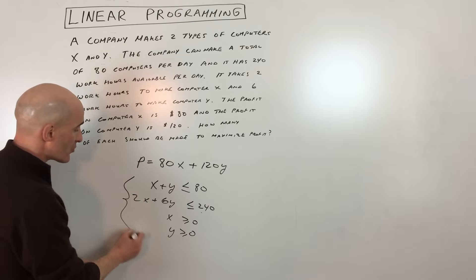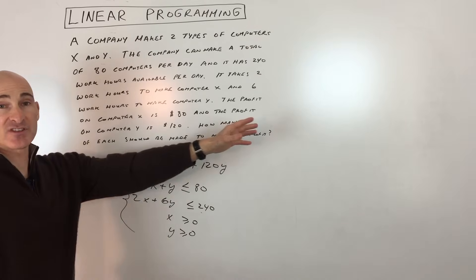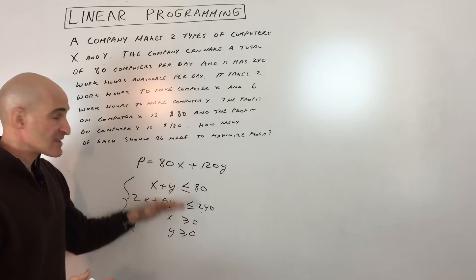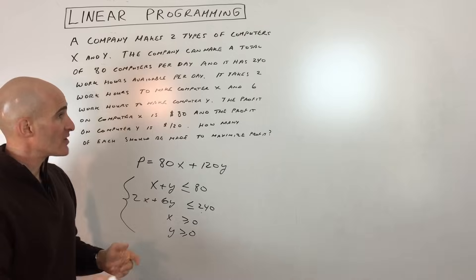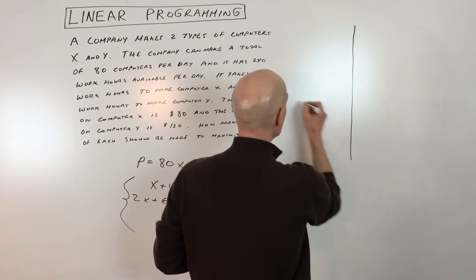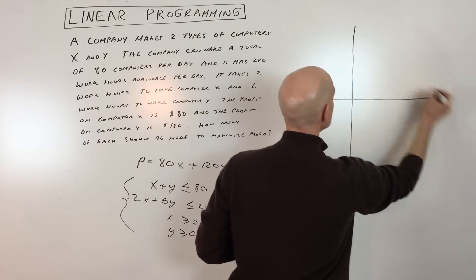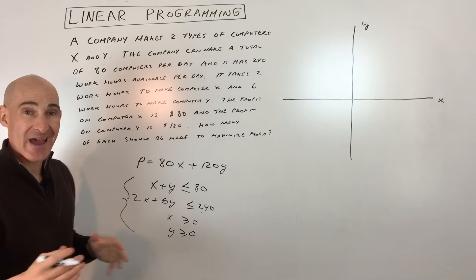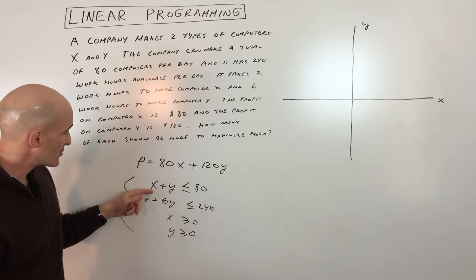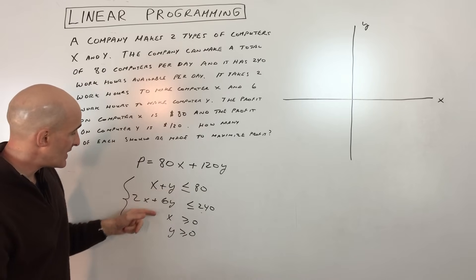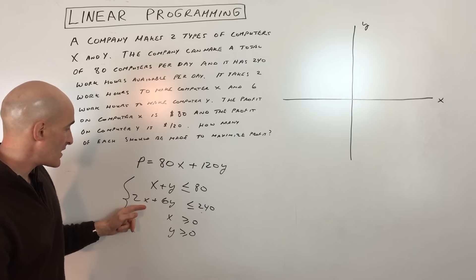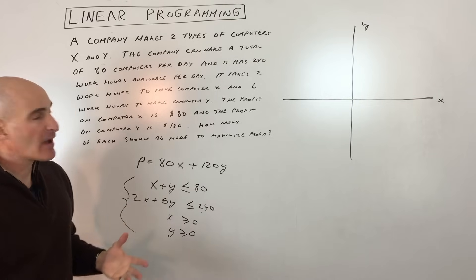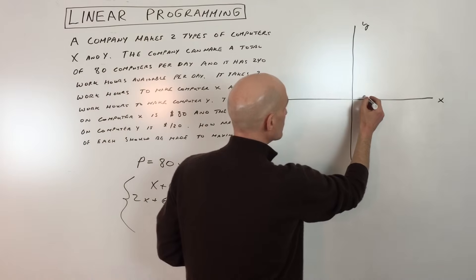We're going to graph these constraints and look at the feasible region that satisfies all of them. Setting up the axes with X and Y, we look at intercepts: around 80, and maybe 40 and 120 for the second constraint. It makes sense to count by 20s, so we mark 20, 40, 60, 80, 100, 120 on both axes.